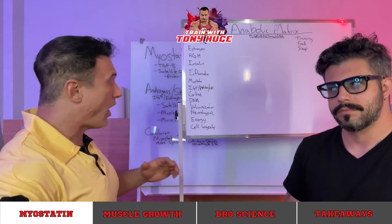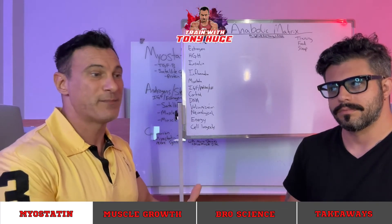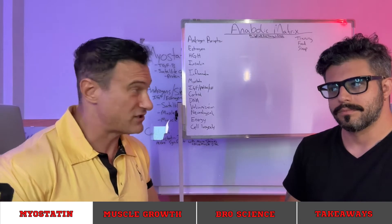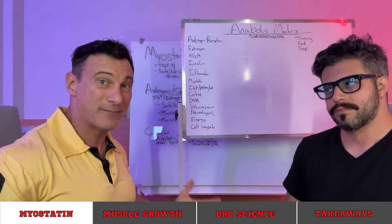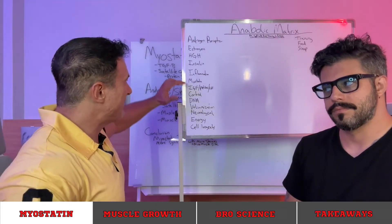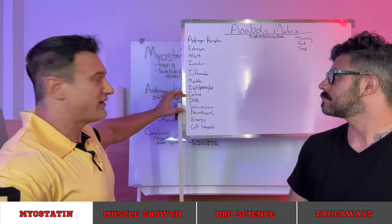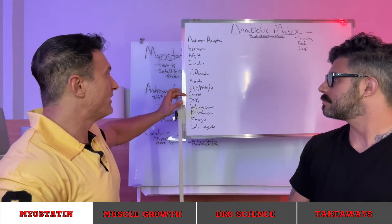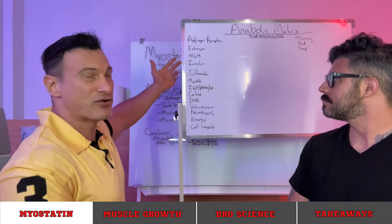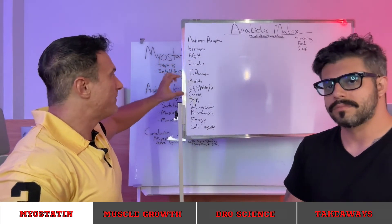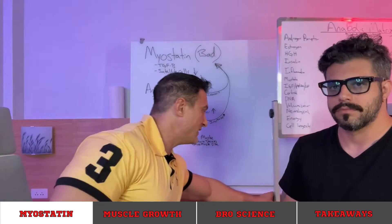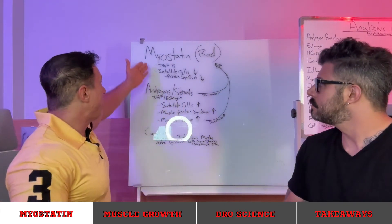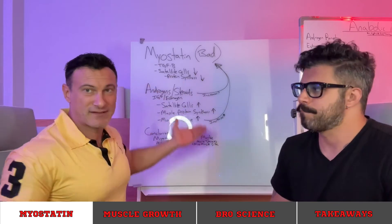Some clients get prescribed protocols to lower myostatin and others don't. Myostatin is something we want to decrease — lower myostatin means bigger, more muscles. That's not the only thing we want to decrease; there's also a cortisol pathway. Most pathways involve increasing hormones or sensitivity to them, but myostatin and cortisol are two we want to decrease for maximal muscle growth.